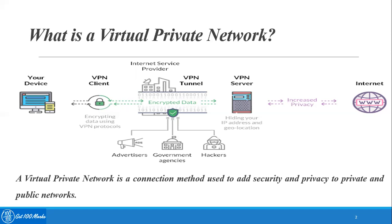One more option available to us is to start using a VPN. VPN is a means to encrypt or secure your data to keep it safe and add a layer of privacy to protect your identity. There are different types of VPNs available, like OpenVPN, and higher-bit VPNs such as 256-bit VPN and 128-bit VPN.